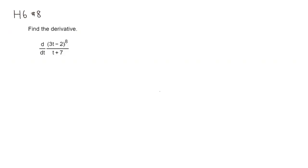So let's take the derivative. Quotient rule says that we have to square the denominator, so we have quantity t plus 7 squared. So this part is easy.